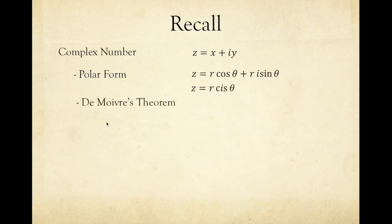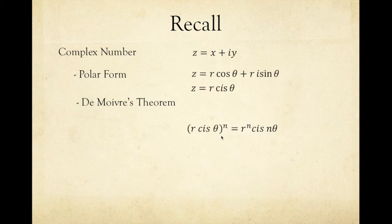We also need De Moivre's theorem. This is an important theorem in deriving trigonometric identities, and that would be r cis theta to the power of n is equal to the modulus to the power of n, cis n theta, wherein you multiply the index by the argument.